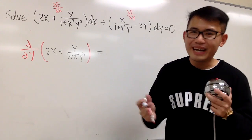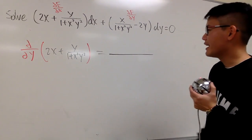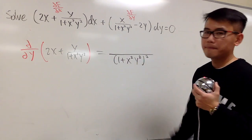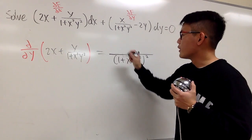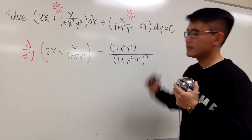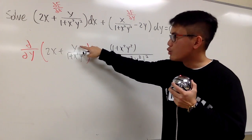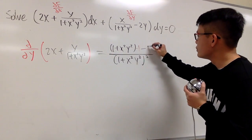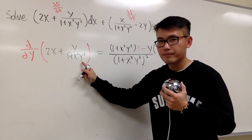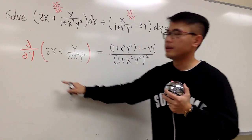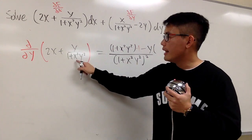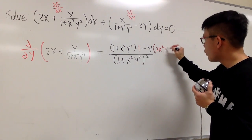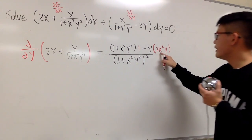We have y on the top and bottom, so we have to use the quotient rule. Let's square the denominator: (1 + x²y²)². The quotient rule says: bring the bottom function (1 + x²y²) and multiply by the derivative of the top. The derivative of y in the y world is just 1. Then subtract: keep the top function y, and multiply by the derivative of the bottom. The derivative of (1 + x²y²) with respect to y — the 1 becomes 0, x² stays, bring the 2 to the front — giving us 2x²y.